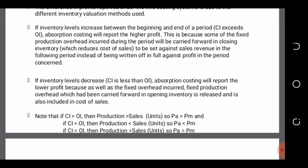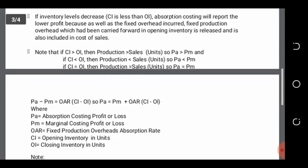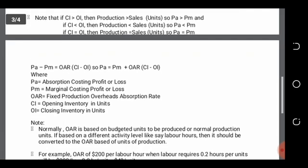In summary: if closing inventory (CI) is greater than opening inventory (OI), meaning production is greater than sales, then absorption costing profit will be higher than marginal costing profit. The reverse applies in the opposite case. And if closing inventory equals opening inventory, then the profit under the absorption costing system will be exactly the same as the profit under the marginal costing system.